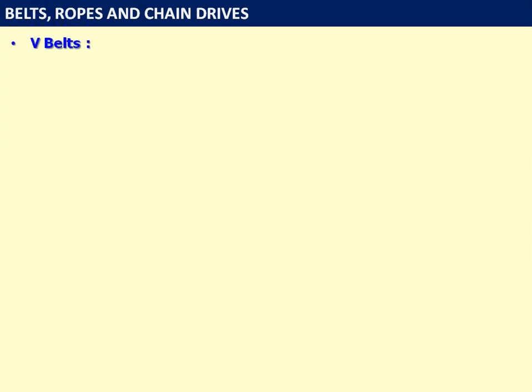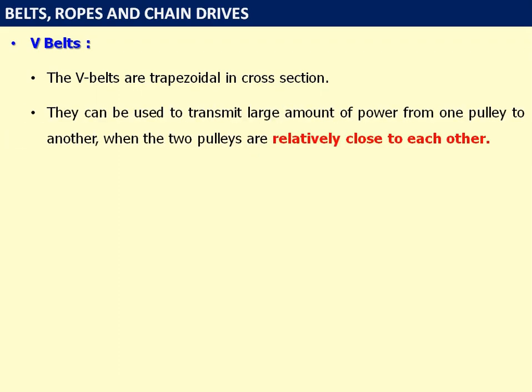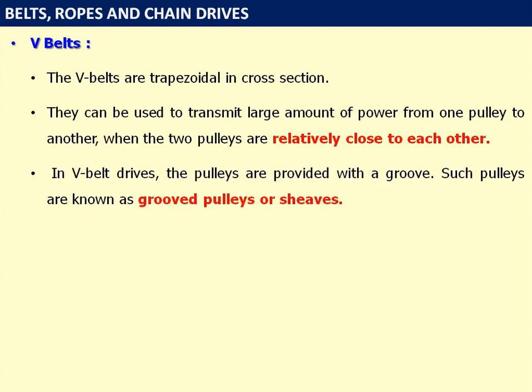V belts are trapezoidal in cross-section. They can be used to transmit large amounts of power from one pulley to another when the two pulleys are relatively close to each other. In V belt drives, the pulleys are provided with a groove. Such pulleys are known as grooved pulleys or sheaves.